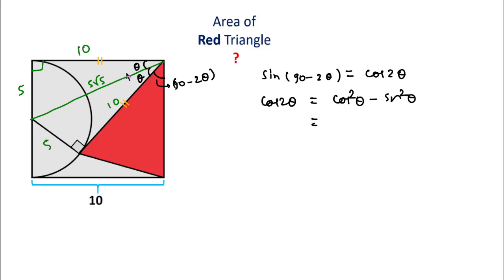In this triangle, cos θ equals base over hypotenuse. The base is 10 and the hypotenuse is 5√5. And sin θ equals perpendicular over hypotenuse, which is 5 over 5√5.